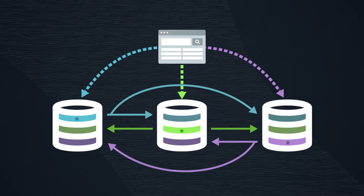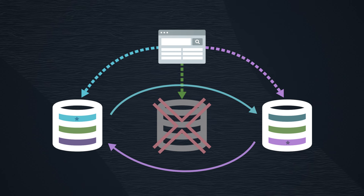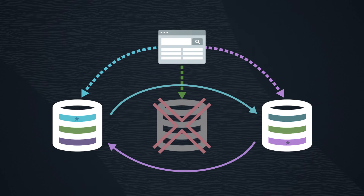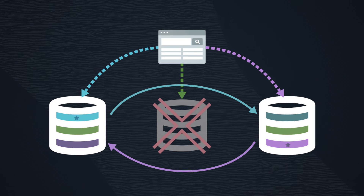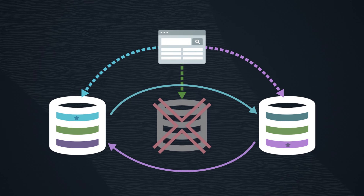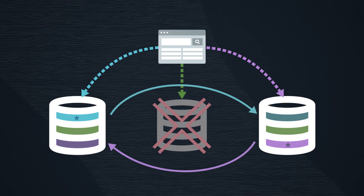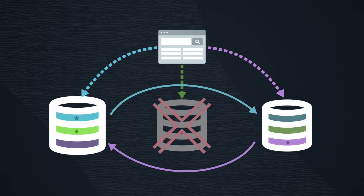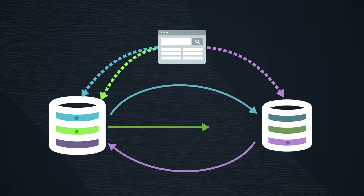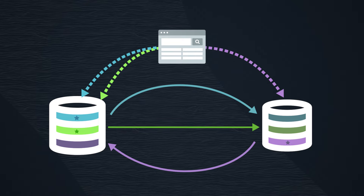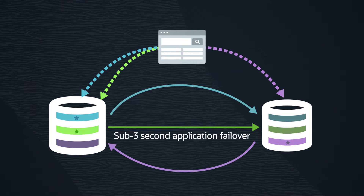If a leader shard becomes unavailable — for example, if a node goes down, a data center goes down, or there is loss of network connectivity — all the followers compete to become the leader for the portion of data owned by the unavailable leader. One of the followers is promoted to be the new leader, and the application seamlessly gets routed to that newly elected leader. This provides a sub-three-second application failover.